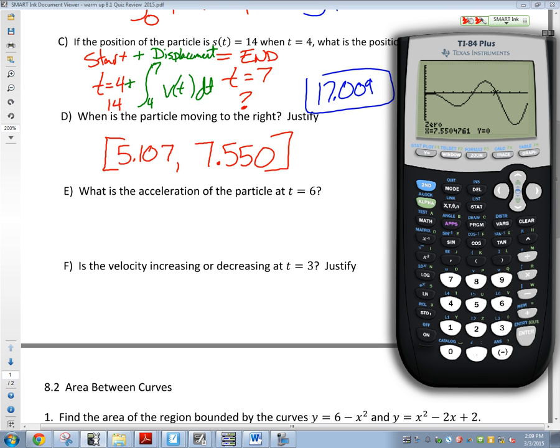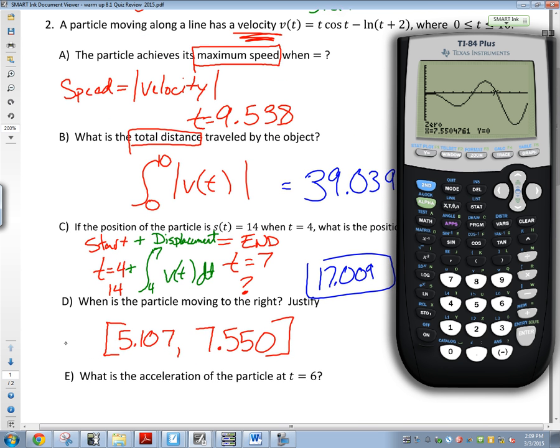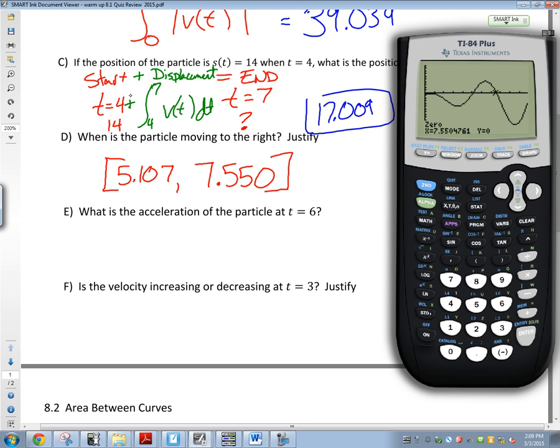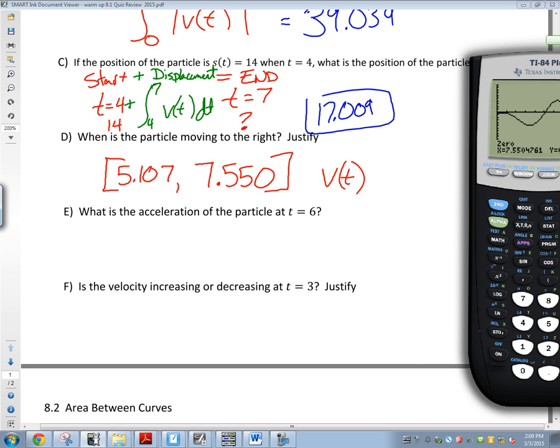And now it asks us to justify. Just be smart with this justification. Don't make it difficult. So Reagan, what were we looking for to decide when we were moving to the right? What was positive? The graph. Let's get even more specific. What is the name of this graph that we have? V of t. This is a V of t graph. So Reagan said the graph is positive. When we're writing a justification, tell them its name. So if I'm justifying this, v(t) is positive. You can say positive, or you could just write greater than zero. That's the easy way to write positive. Questions there? We're almost done. Stick with me.